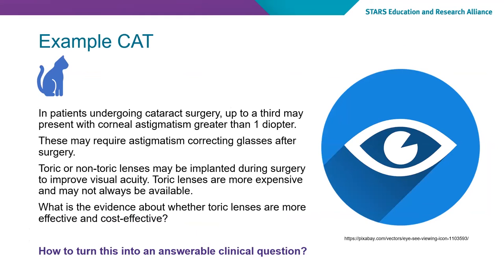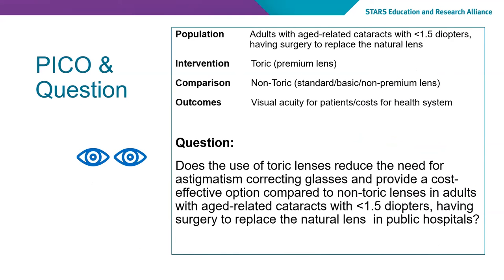Here's another example, again starting from a scenario. Inpatients undergoing cataract surgery — up to a third may present with corneal astigmatism greater than one diopter. These may require astigmatism-correcting glasses after surgery. Toric or non-toric lenses may be implanted during surgery to improve visual acuity. Toric lenses are more expensive and may not always be available. What is the evidence about whether toric lenses are more effective and cost effective? Let's look at turning this into an answerable clinical question using our PICO — here it's much more defined.